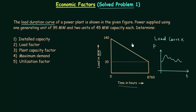To plot the load duration curve from the load curve, the first thing is to measure the maximum demand or the maximum load. Let's call it Pmax, and Pmax is equal to 140. So in the load duration curve when t is equal to 0, you will have the maximum power or maximum demand equal to 140.